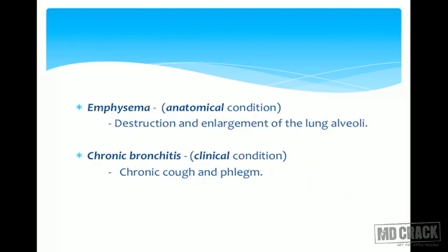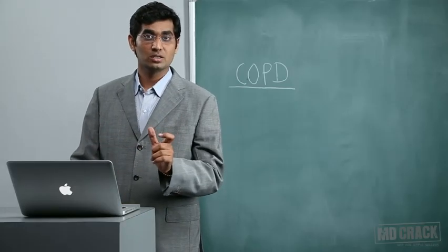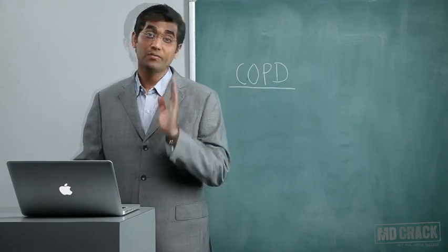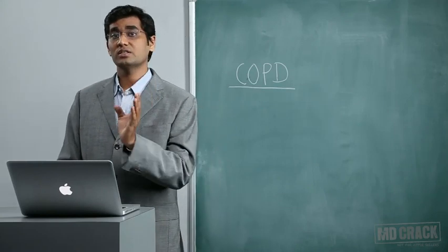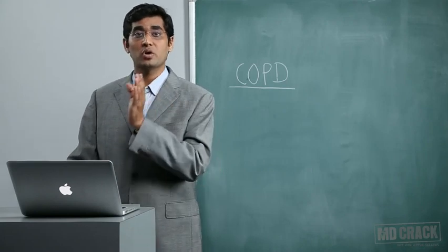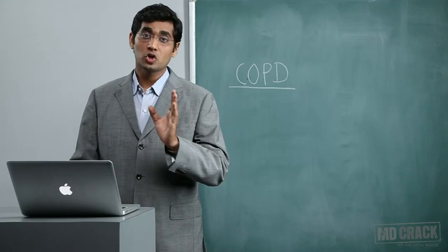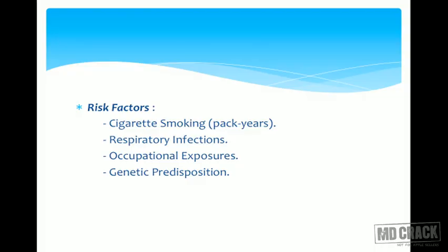Emphysema is an anatomical condition defined as destruction and enlargement of the lung alveoli. Chronic bronchitis is a clinical condition defined as a chronic cough with sputum production. A cough is labeled as chronic when it lasts more than six weeks. For chronic bronchitis to be classified as COPD, there must also be a component of airflow obstruction.